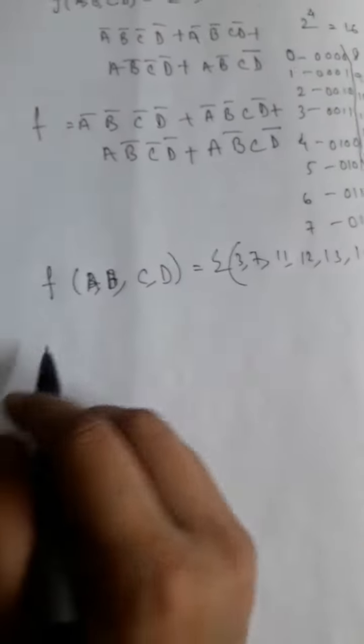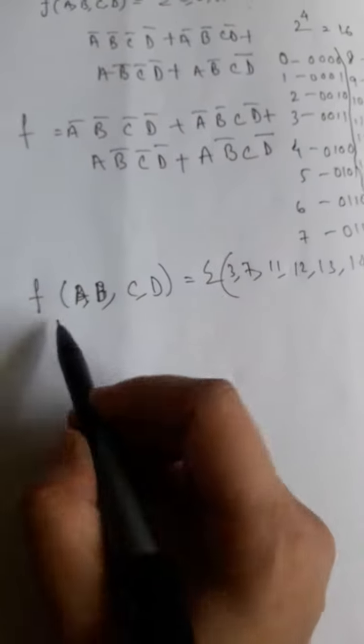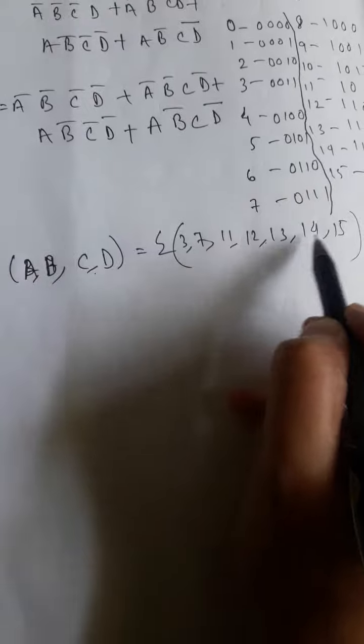There was another problem based on the sum of product concept. F of A, B, C, D with minterms 3, 7, 11, 12, 13, 14, 15.